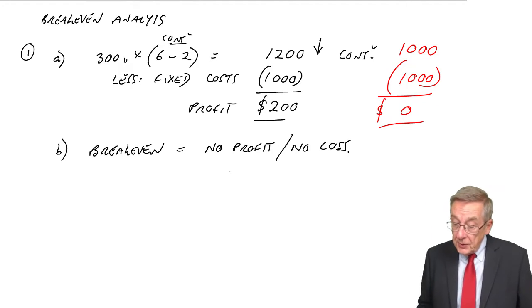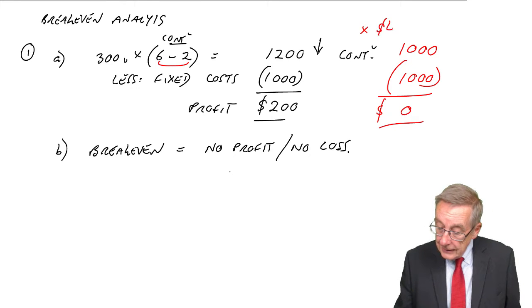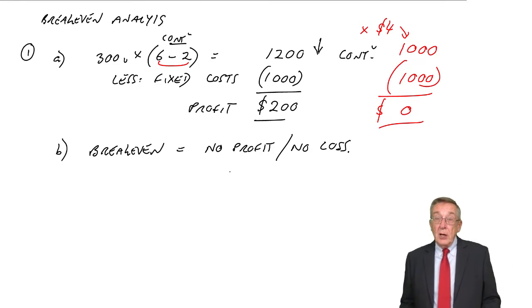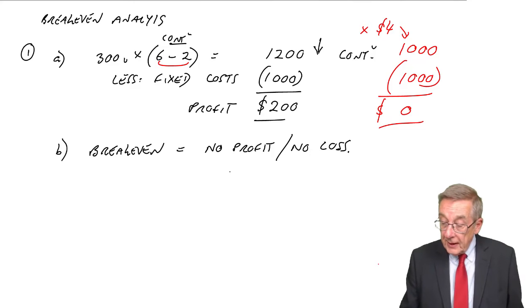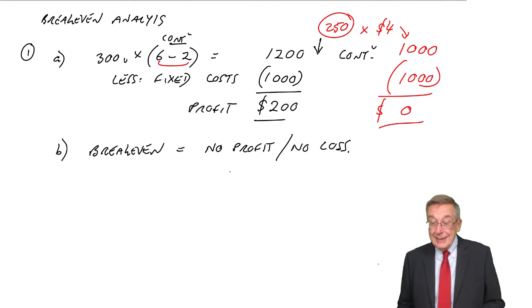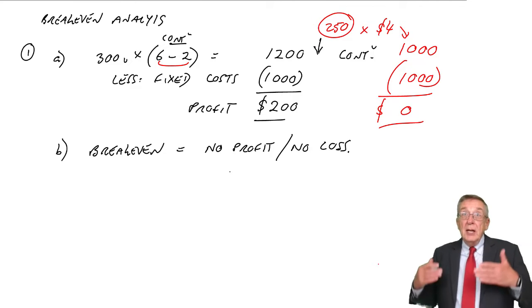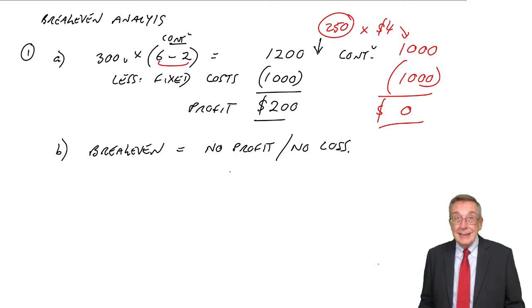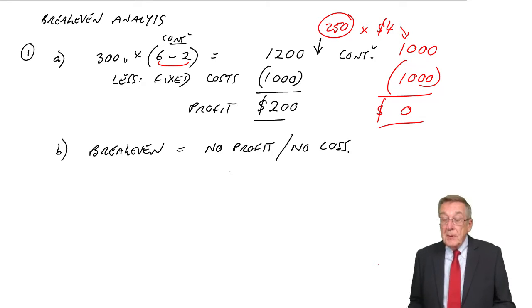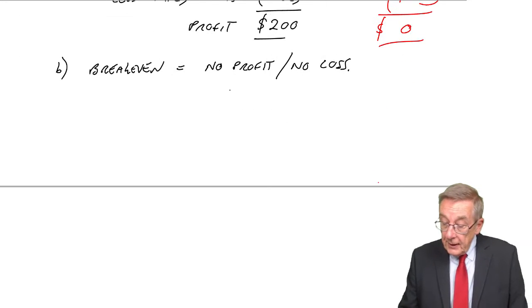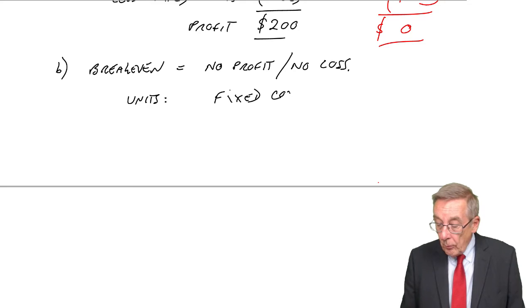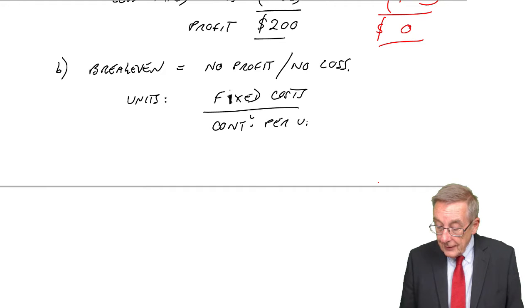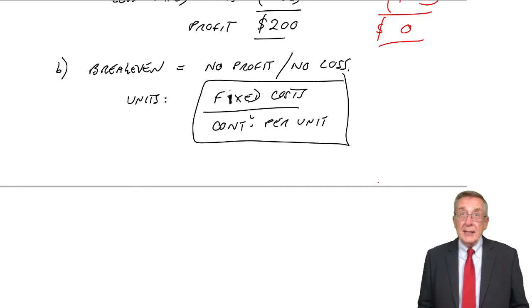We know the contribution per unit is $4. And so, to end up with a contribution of $1,000, $1,000 divided by 4, it must be 250 units. Now, you can learn the rule, but see the logic. To end up with zero, total contribution must be equal to the fixed costs. The units sold must be the total contribution divided by the contribution per unit. The break-even in units is equal to the fixed costs divided by the contribution per unit. Do learn that, but as always, see the logic. Just don't simply learn a rule.